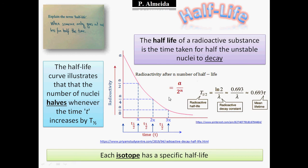So A initial over 2 to the N — this is how many times you keep dividing by 2. If my N is 3 (three half-lives), I have A over 2³, and 2³ is 8, so A/8. The half-life curve illustrates that the number of nuclei halves whenever the time increases by one half-life. The only difference between different samples is the numbers on the axes — all curves have the same shape.